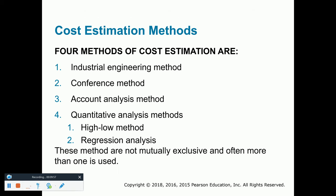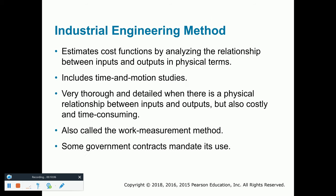There are four methods that people typically use for estimating costs. Number one: the industrial engineering method. That's when we actually analyze the relationships between the inputs and the outputs.